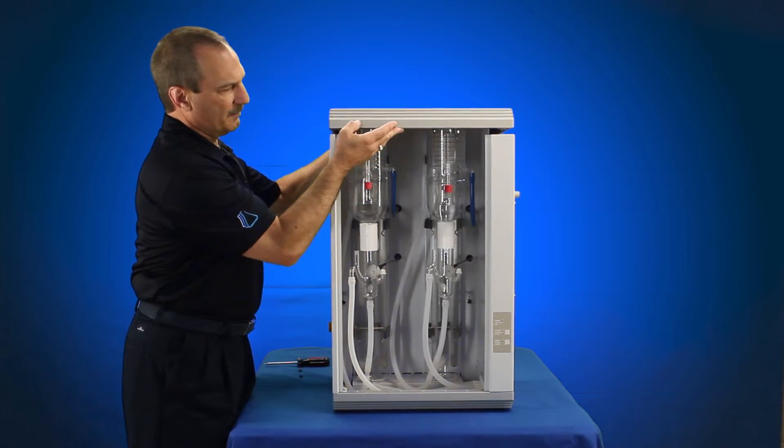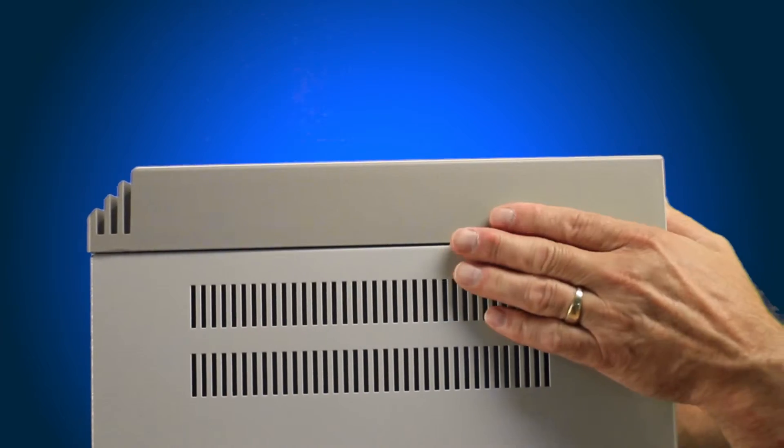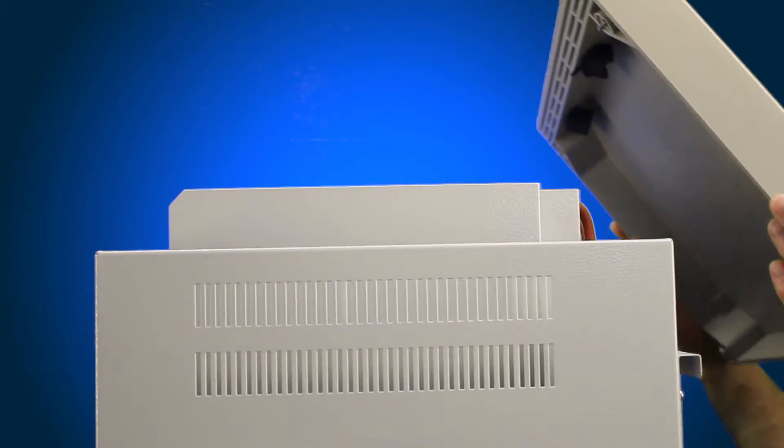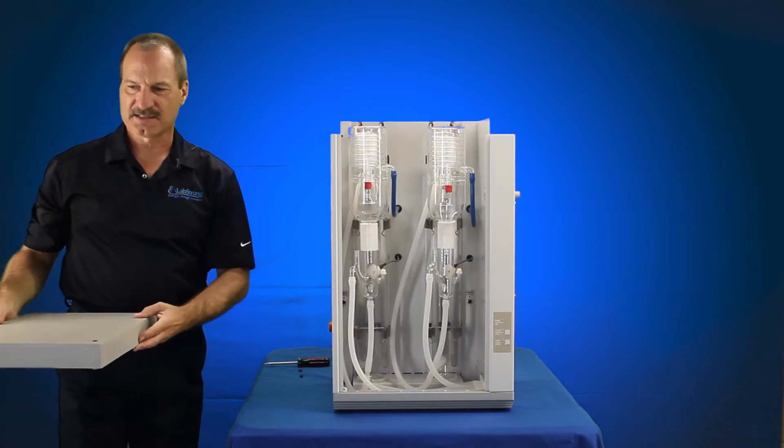You can pop the front up and then the back are just two bolts that are elongated and elongated holes. Just slide it ahead until you find the opening and then pop the top cover off and remove it. Set that aside.